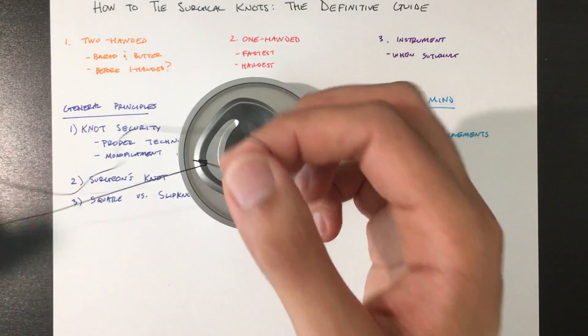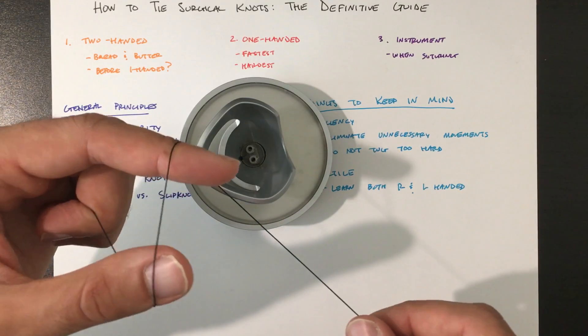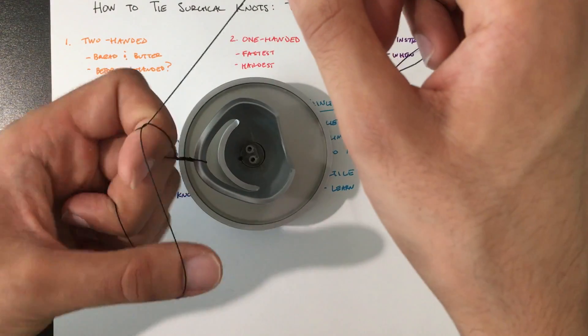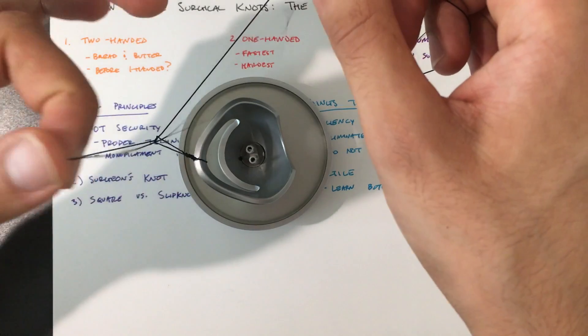I'm going to show you that one more time. So you have the gun. Opposite direction. Wrap around. Pull it through.